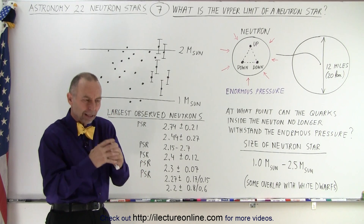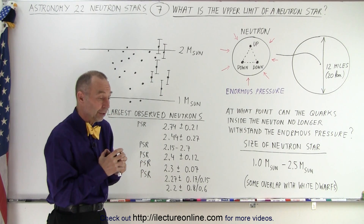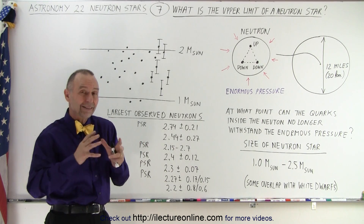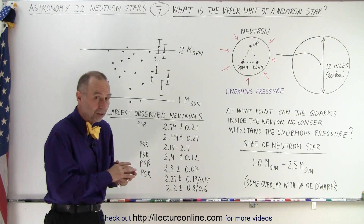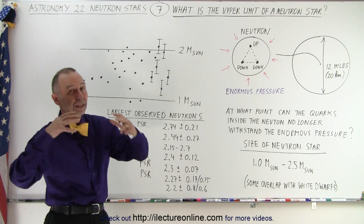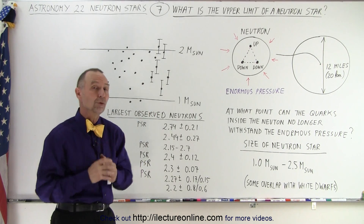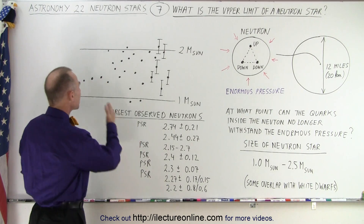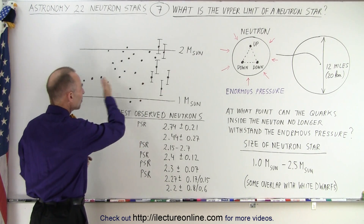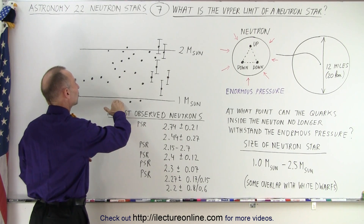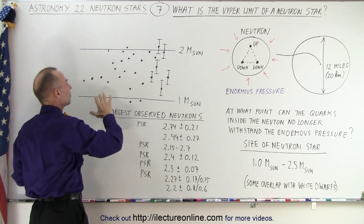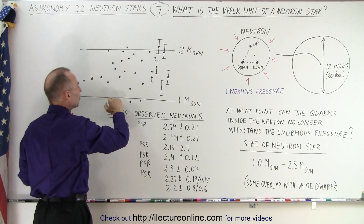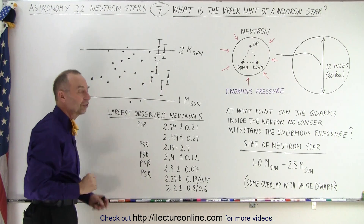When it collapses, that becomes the mass of the neutron star. Cores with less than 1.4 times the mass of the sun — less than the upper limit of a white dwarf — can also collapse into a neutron star. Observations show they vary from about 1 to a little over 2 times the mass of the sun, with the vast majority falling between 1 and 2 solar masses.